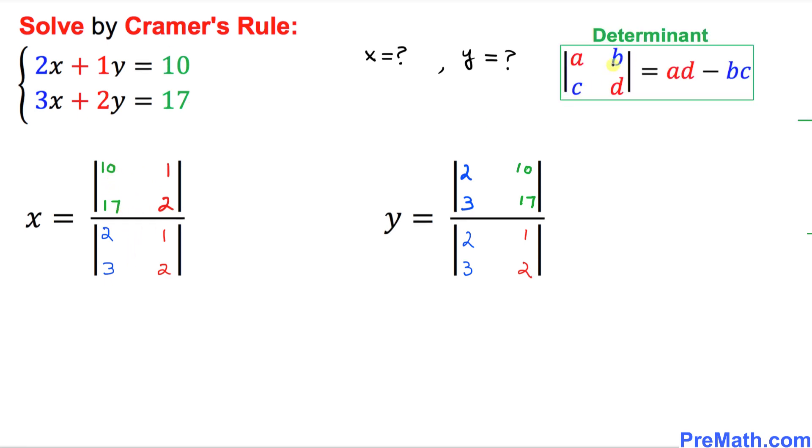And we are going to use this fact, this formula over here. The value of the determinant of a, b, c, d equals to, we're going to multiply diagonally, a times d minus the other way around, b, c. So we're going to be using the same definition over here. We're going to cross multiply this thing diagonally.